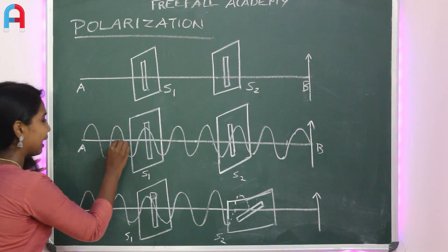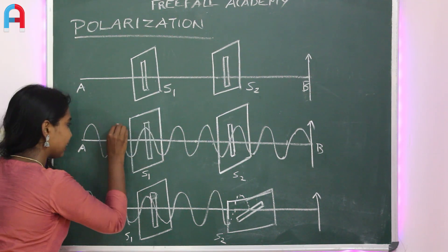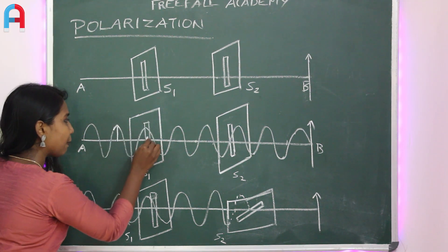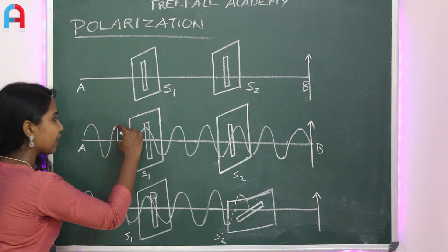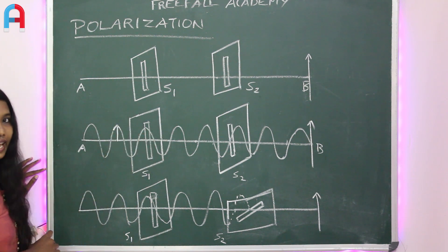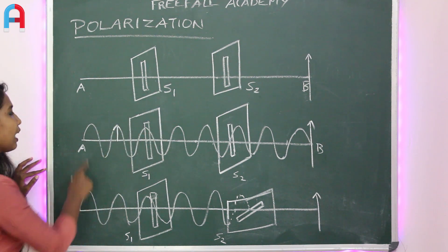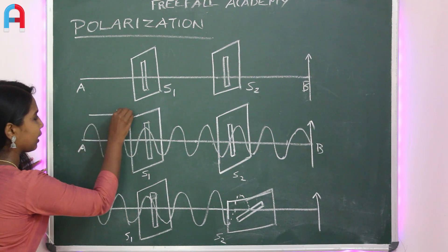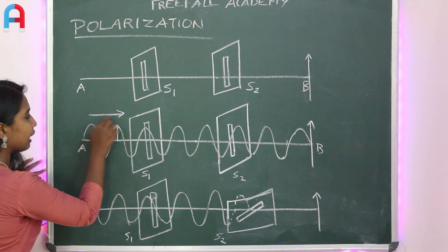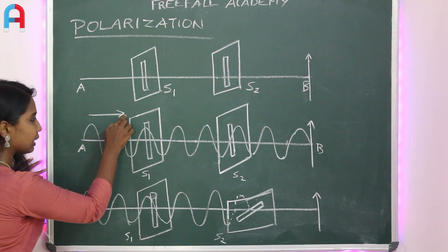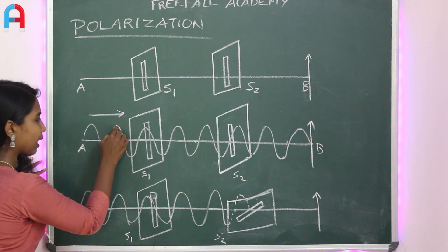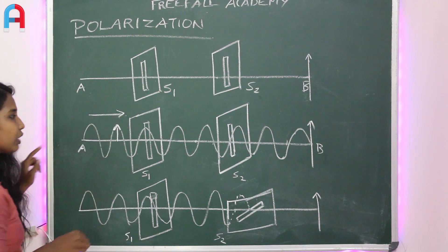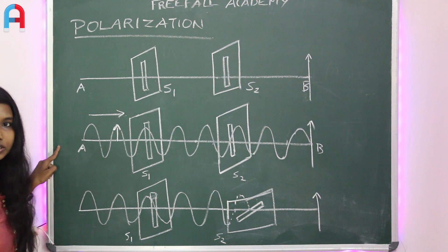Vibration is in the direction perpendicular to the string. The slit is parallel to the vibration direction. This sets up a transverse wave.